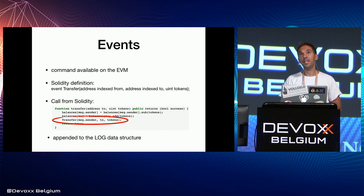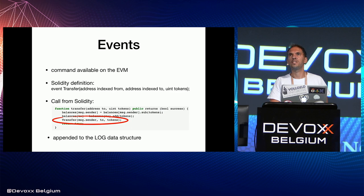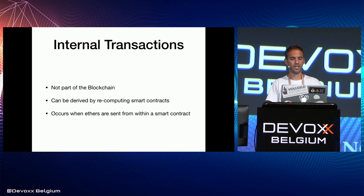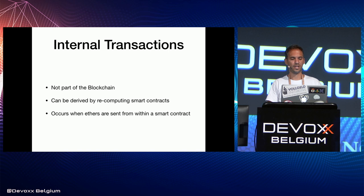In Hyperledger you can make network connections within a smart contract; in Ethereum you can't — because if you could, someone could run a distributed denial-of-service attack just by deploying a smart contract. There are also internal transactions in Ethereum — transactions sent from one smart contract to another — which are not part of the blockchain. This is important to know because they can be hard to trace.